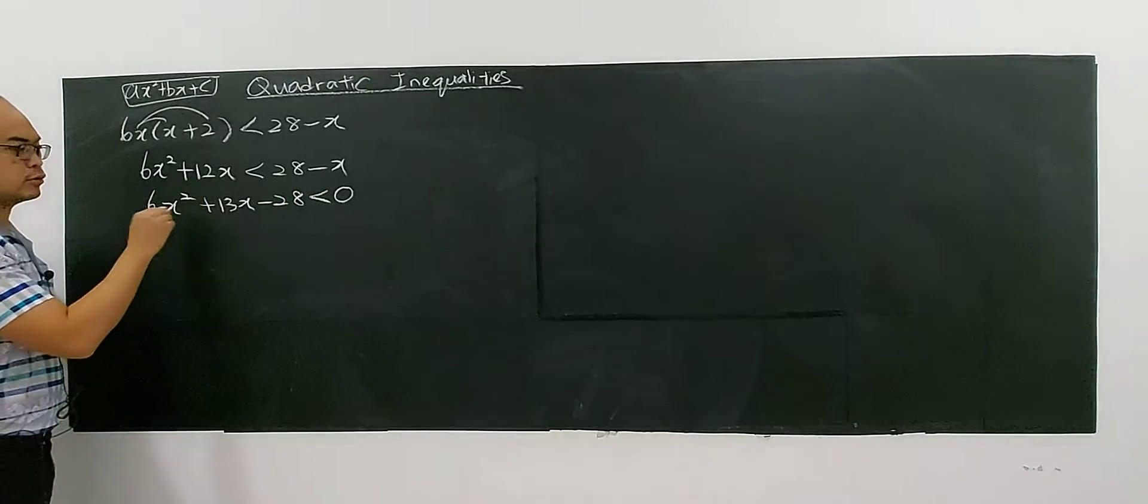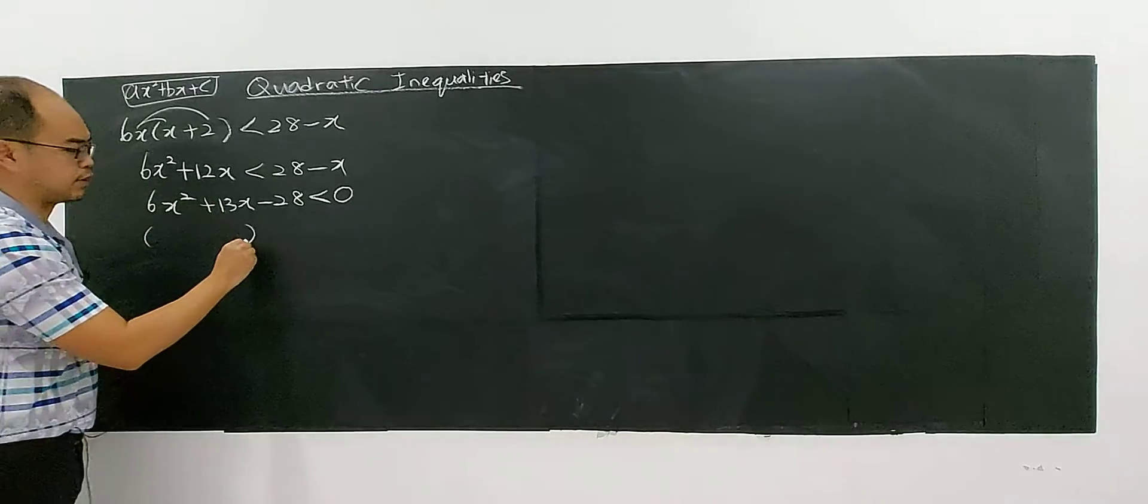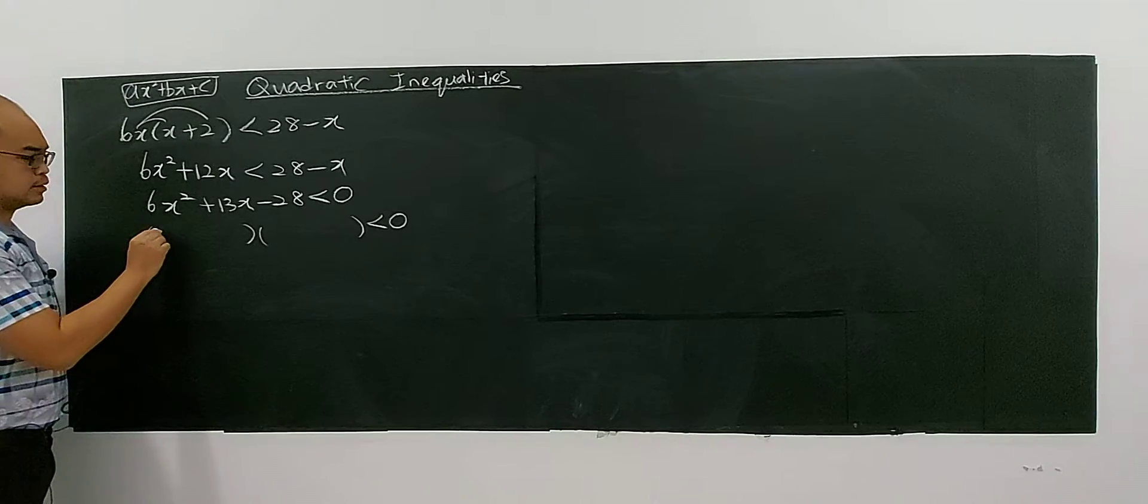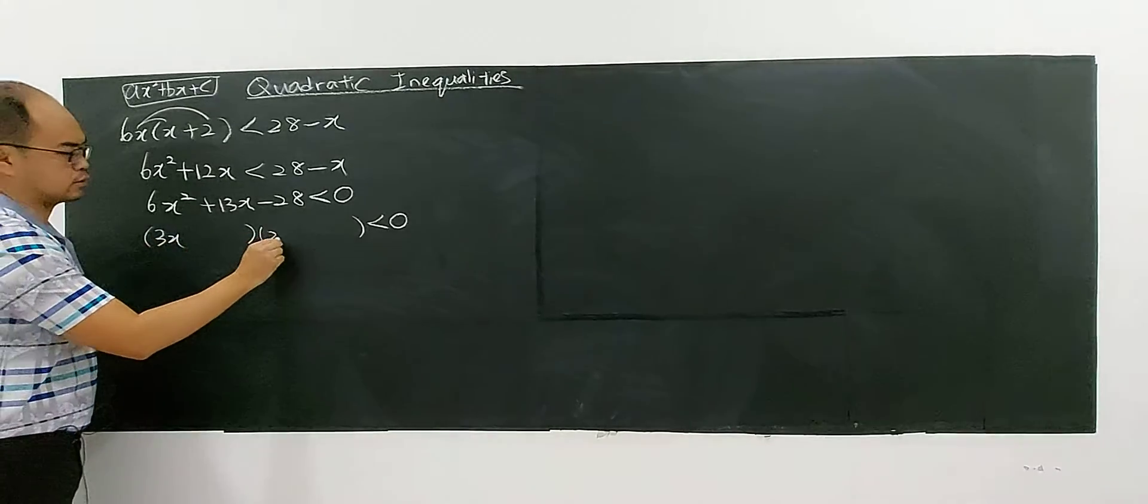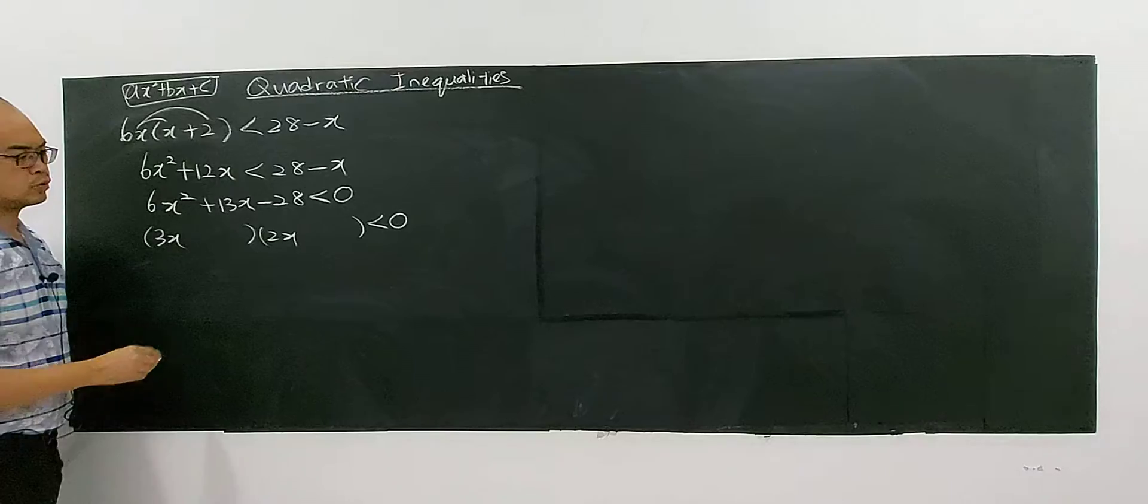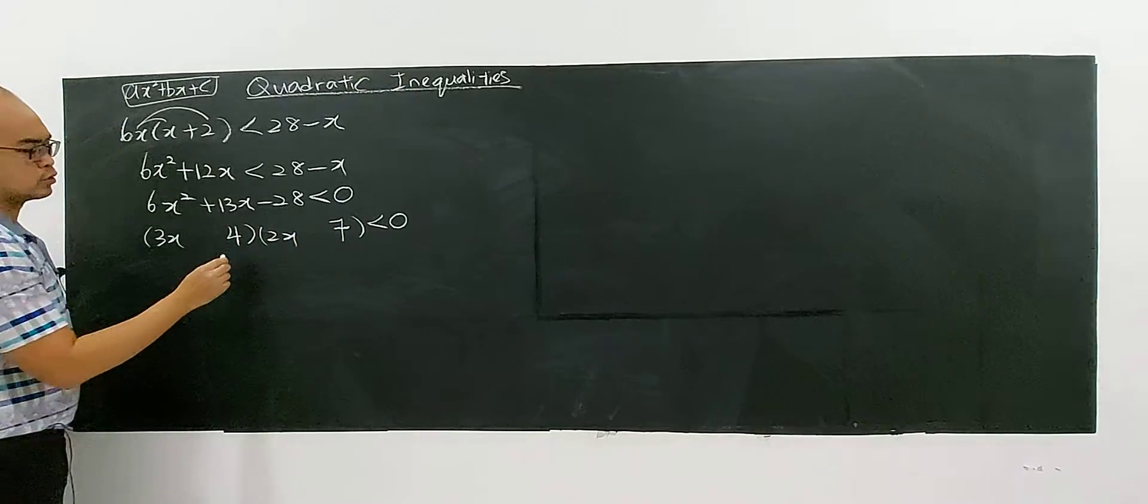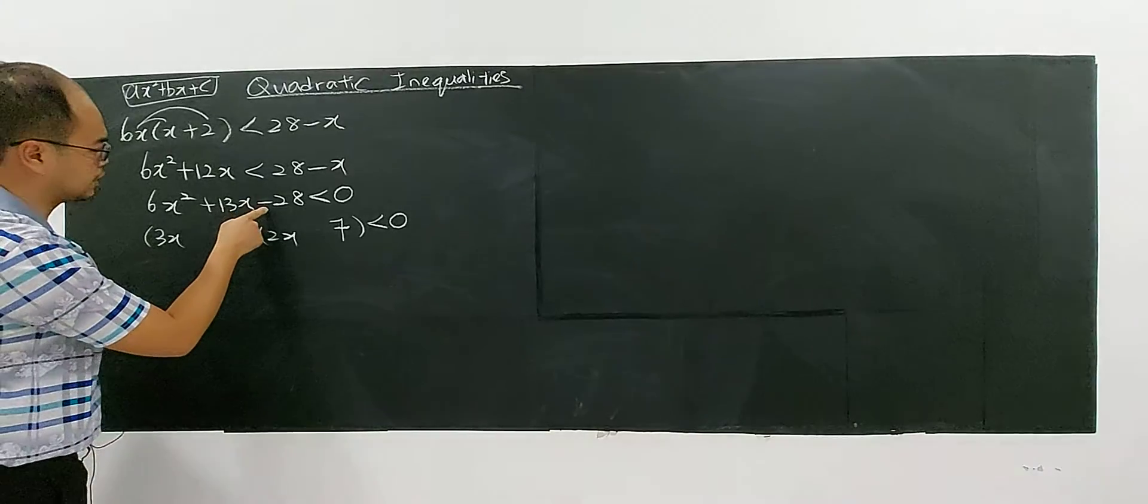Then you have to check with a calculator or see if this can be factorized. You have 3 times 2x equals 6x². I will try with 4 and 7. If you see there's a negative sign here.